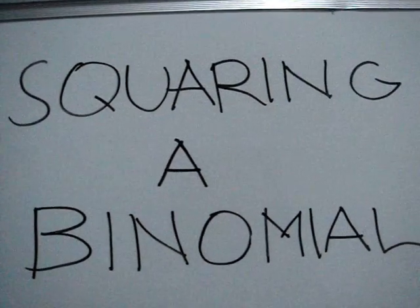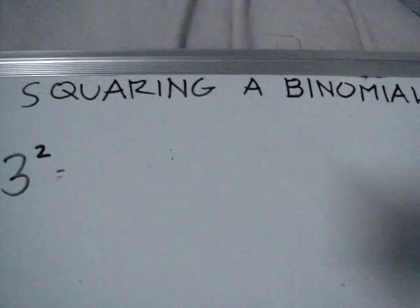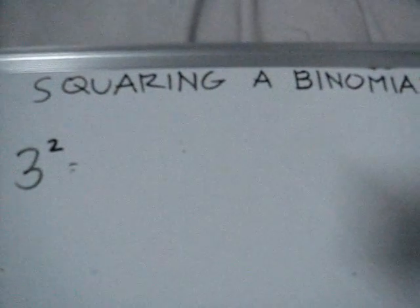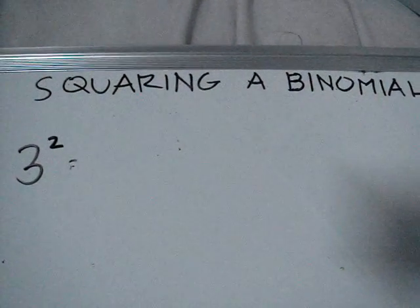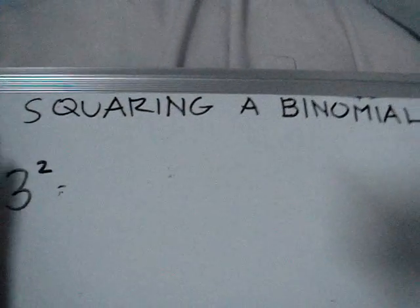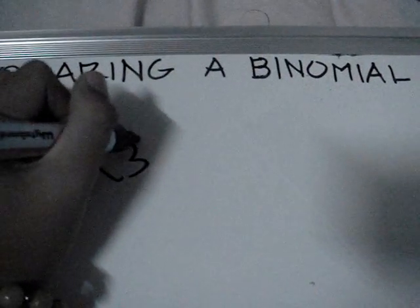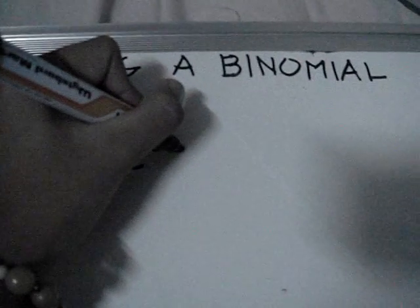Squaring a binomial is simply multiplying a number or expression by itself. Take for example squaring the number 3: 3 squared is equal to 3 multiplied by 3, which results in 9.